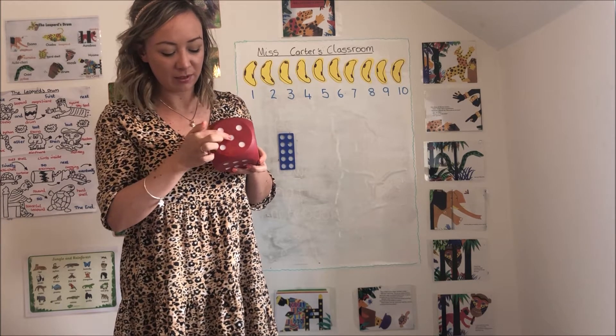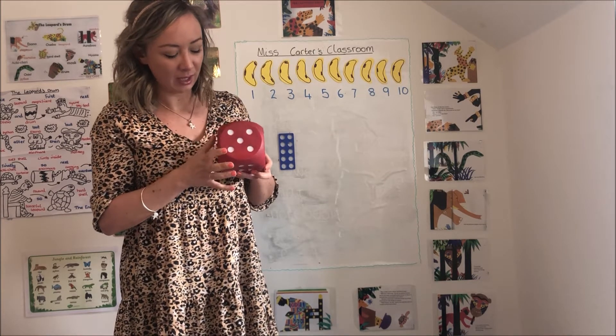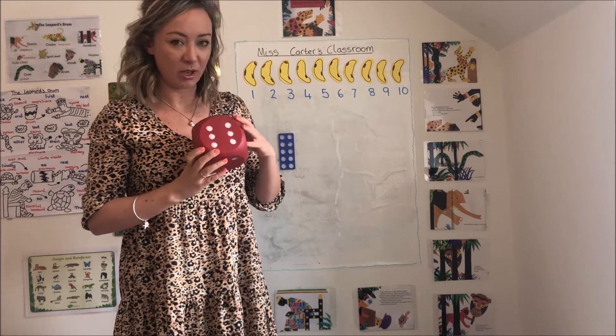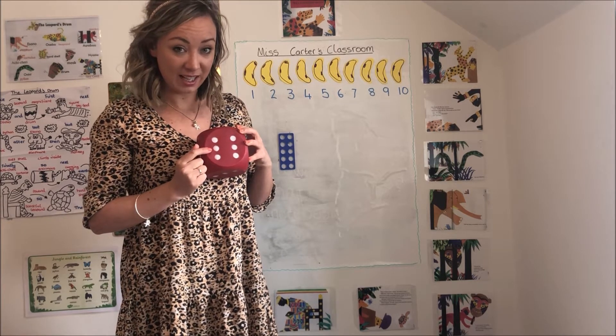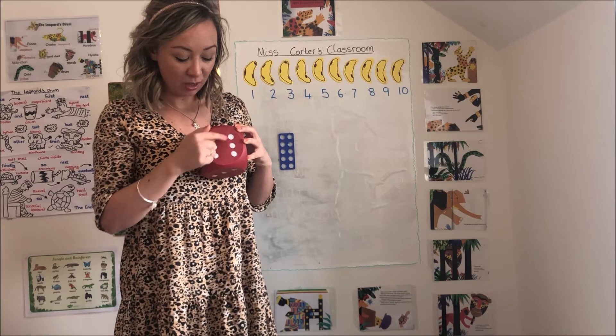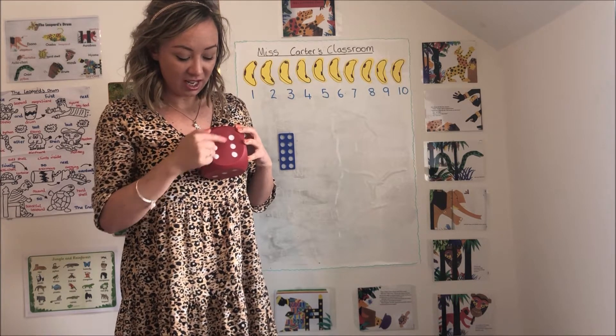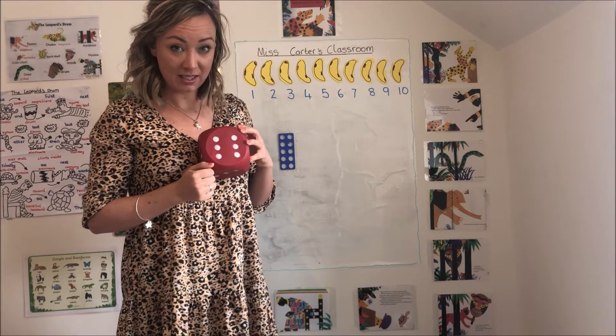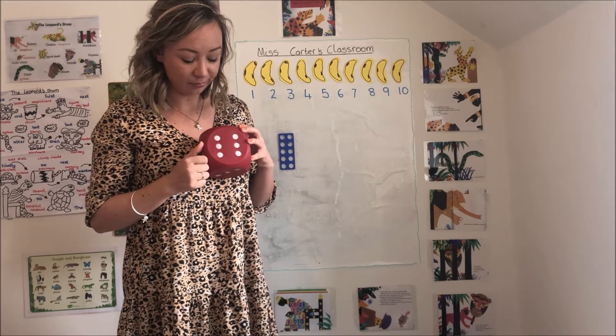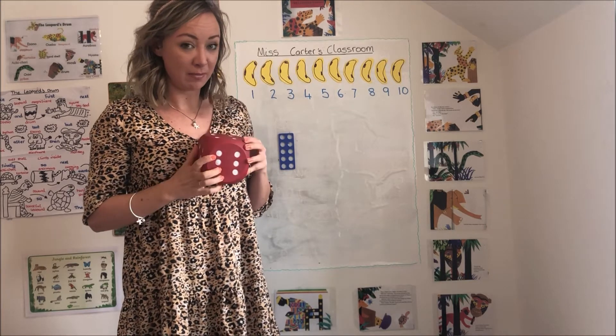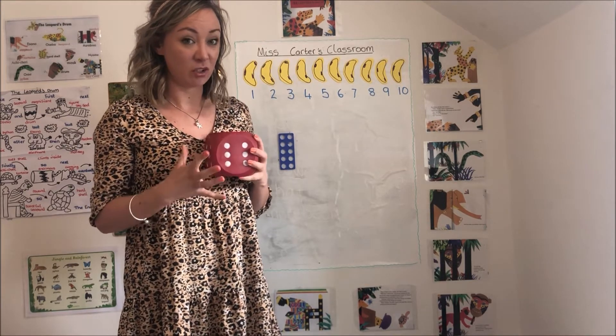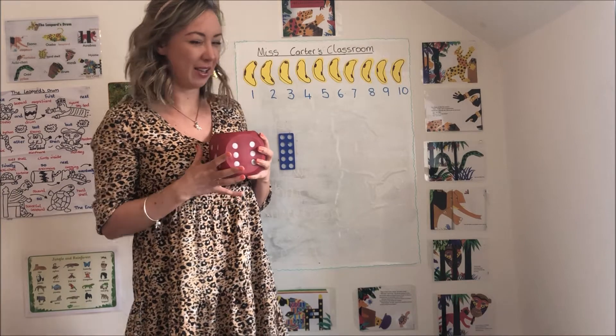Can you see number five has got one in the middle? And the last one, we've got number six. We learnt about six yesterday, didn't we? And we learnt that three add three makes six. And you can see that on the dice here. So I'm going to play a very quick game. I'm going to spin my dice and stop it and you've got to shout out the number as loud as you can.